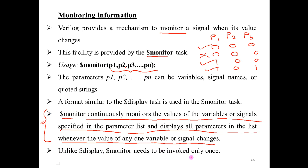Unlike `$display`, `$monitor` needs to be invoked only once. With `$display`, if you want to display something twice you need two display commands; five times needs five commands. With `$monitor`, invoking it once is sufficient because it executes whenever there is a change in the parameter list values. This is a very important difference: `$monitor` is invoked only once, whereas `$display` is invoked on a need basis as many times as required.